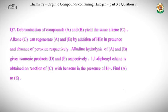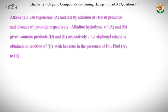We need to find A, B, C, D, E based on the statements which describe each and every reaction. There are multiple reactions described in the statements. The easiest way to start is to find which statement is simplest to work with. The last line — 1,1-diphenylethane obtained on reaction of C with benzene in presence of H+ — is our starting point.